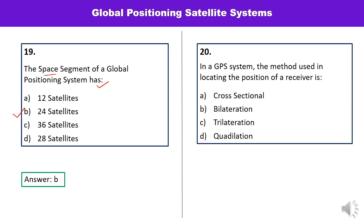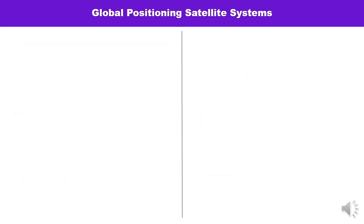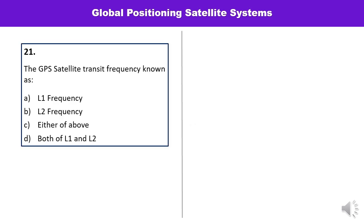Question number twenty: In a GPS system, the method used in locating the position of a receiver — you can pick it quickly — C, trilateration, is the correct answer. Question number twenty-one: GPS satellites transmit which frequency to the receiver — L1 frequency, L2 frequency, either of the above, or both L1 and L2? GPS transmits both frequencies L1 and L2, so D is the correct answer.